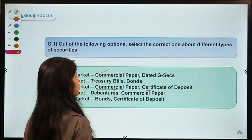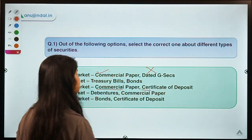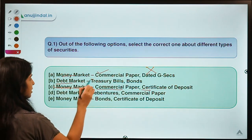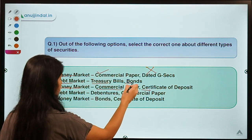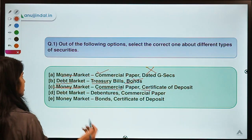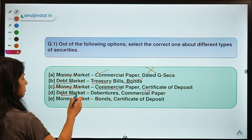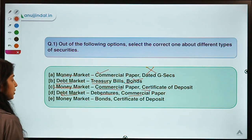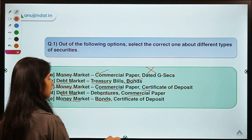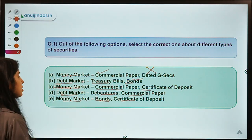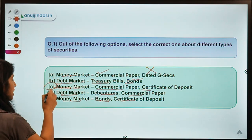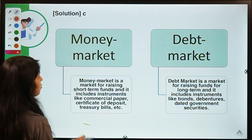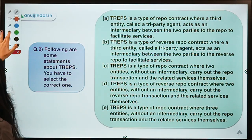That is why option C is correct. In option A, money market includes commercial paper — short-term — but dated G-securities are long-term. Option B puts treasury bills and bonds under debt market — bonds are long-term but treasury bills are short-term. Option D puts debentures — long-term — and commercial paper — short-term — together. Option C is the only one with all correct pairings.